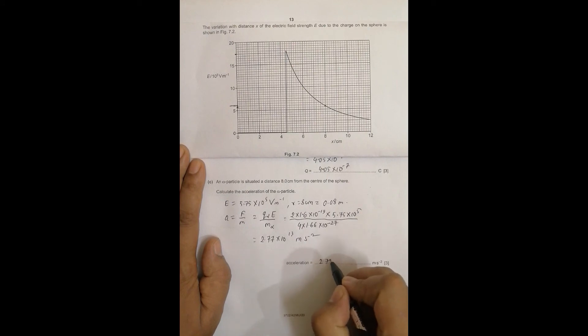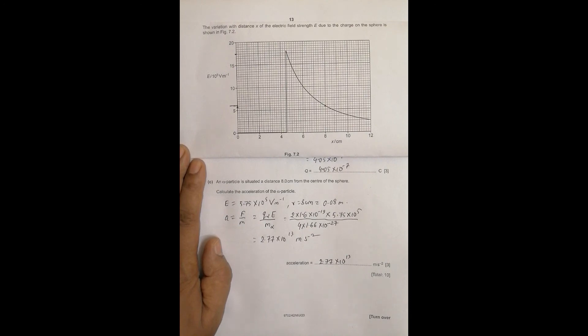So it is 2.77 into 10 to the power 13 meter per second squared. This is a tremendous value, a very huge value, and we might wonder that if it accelerates for one second the velocity will be 2.77 into 10 to the power 13 meter per second. But that's not true because it cannot accelerate for one second. Our physical world is such that when it accelerates the time taken is too short so that the velocity can never reach near the velocity of light. That is how nature arranges itself.